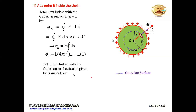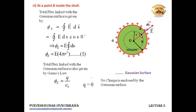The total flux linked with the Gaussian surface is also given by Q upon epsilon naught by Gauss's law. The charge enclosed by the Gaussian surface is 0, because all the charge is present on the surface of the thin hollow spherical shell and no charge is present inside the Gaussian surface. So the value of Q is 0, and therefore by Gauss's law the flux is 0.